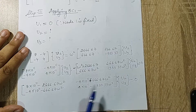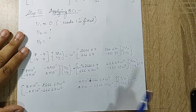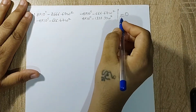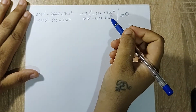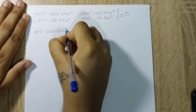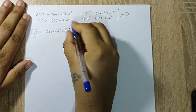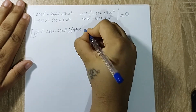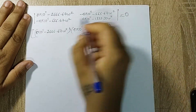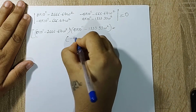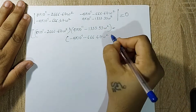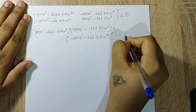Since we have A·b = 0 and b (the displacement vector) is non-trivial, the determinant of A must be zero. Setting the determinant of the coefficient matrix to zero, we cross-multiply and expand. The two off-diagonal terms are exactly the same, so that term appears squared.